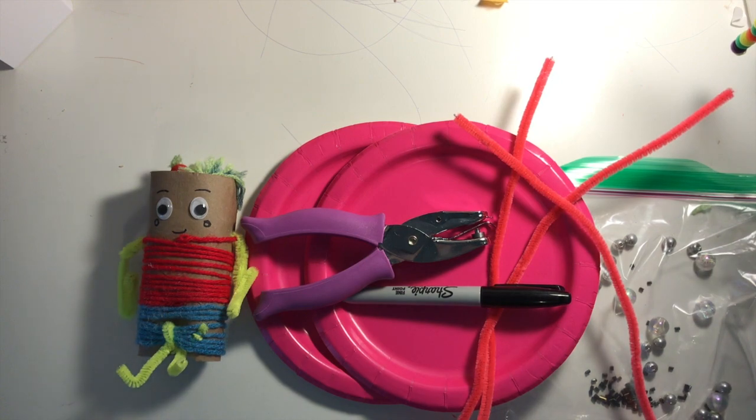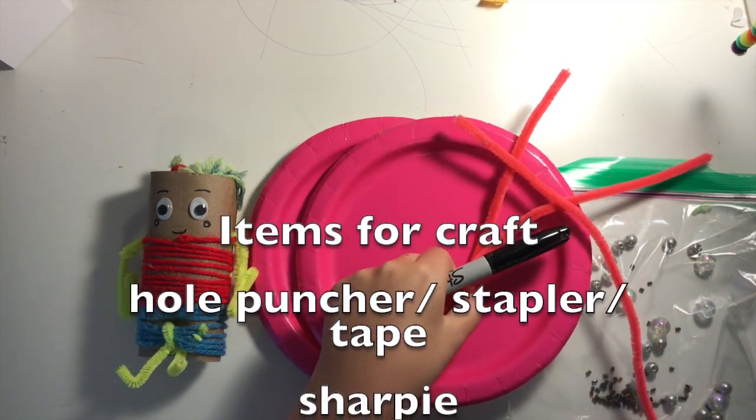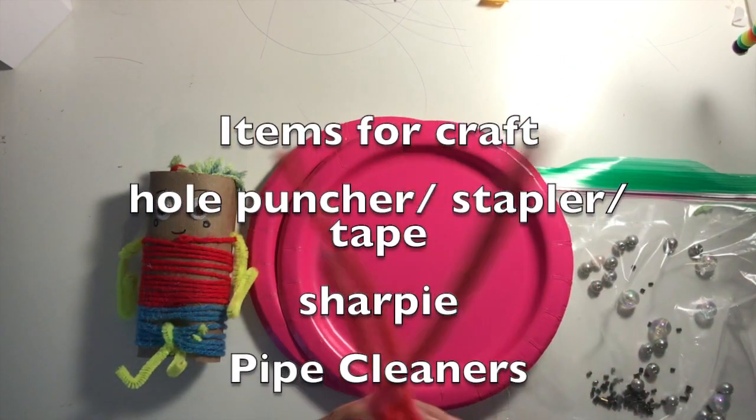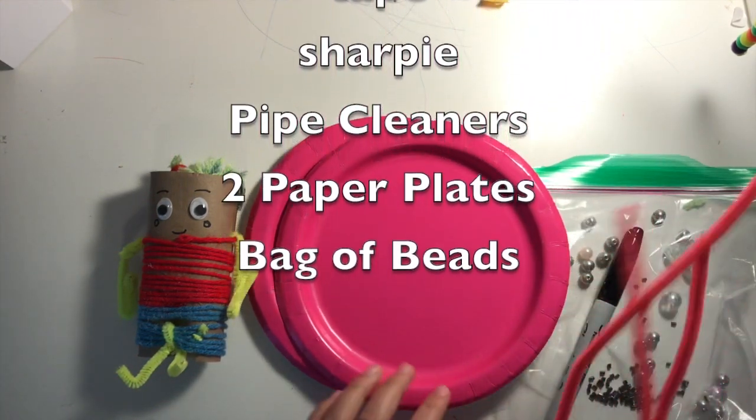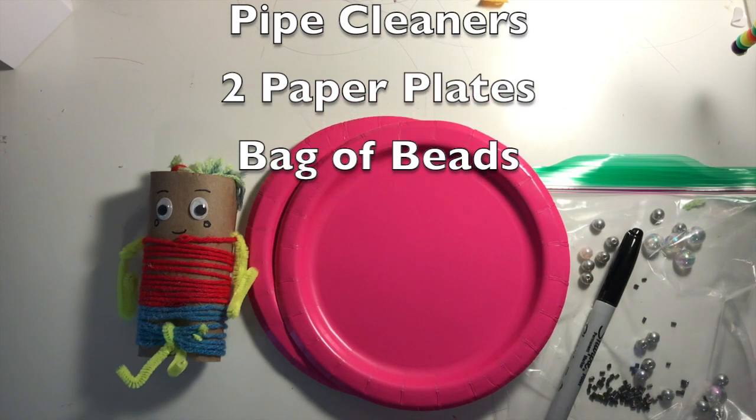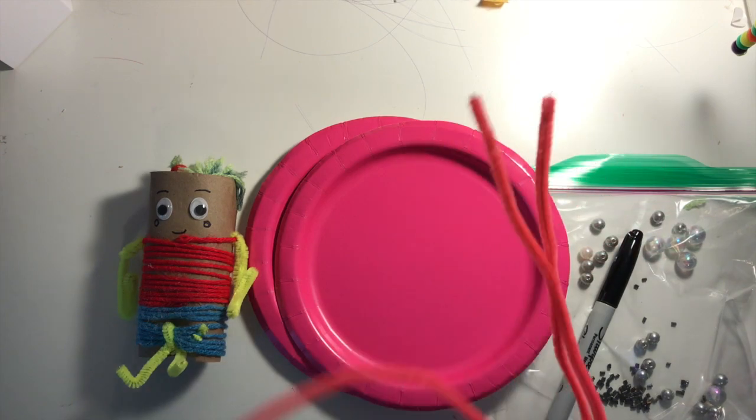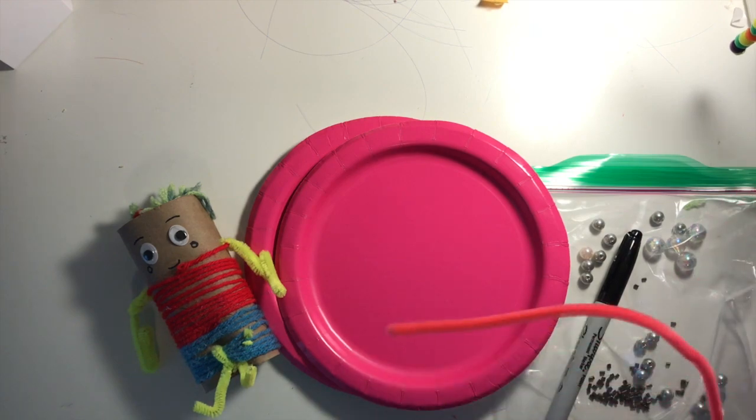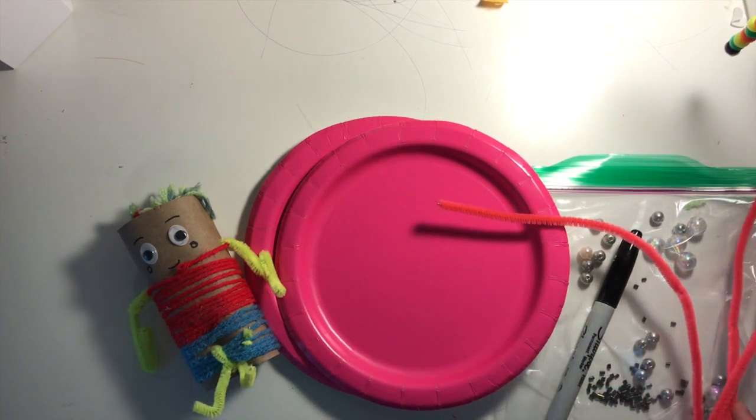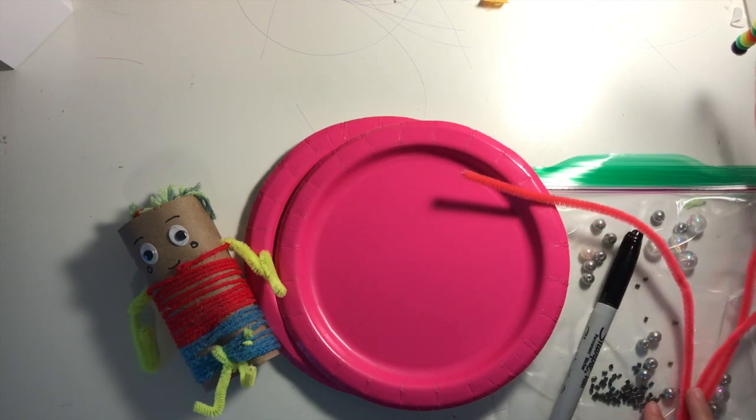So it's a shaker. For this project we will need a hole puncher, Sharpie, three pink or whatever color you desire pipe cleaners. And if you don't have any pipe cleaners feel free to use string, yarn, thread, anything that will hold the paper plate together. You can also use a stapler if you don't have any of that stuff. Tape. That will all work really good.